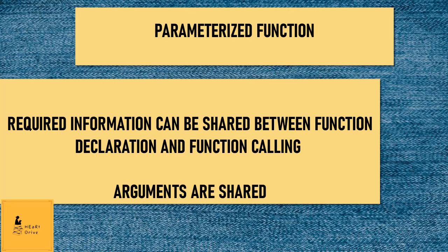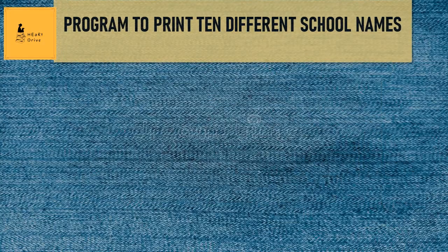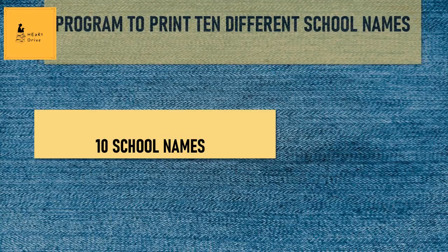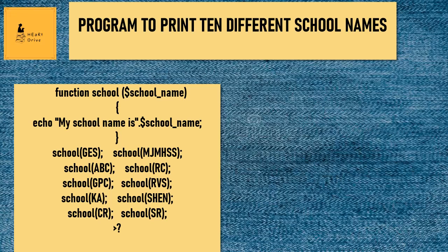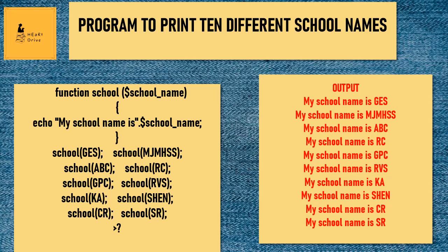Parameterized function: in a parameterized function, required information can be shared between function declaration and function calling. The information which is shared is called an argument. Arguments are mentioned inside the parentheses. Let's see an example — I am going to write a program for displaying ten different school names. The function name is school and I am using the argument school name. I am giving a dollar symbol because school name is a variable here. Inside the echo statement, I have added my school name followed by my variable name, which is dollar school name. When the function is called, we will get this output.